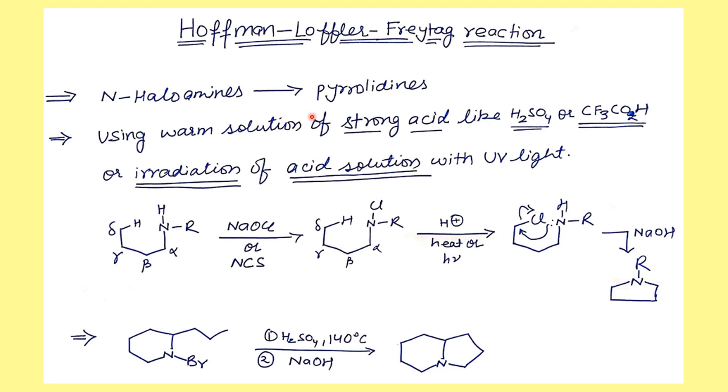In this reaction, we use N-halo amines and these N-halo amines are converted into pyrrolidines. Pyrrolidines are five-membered cyclic amines.